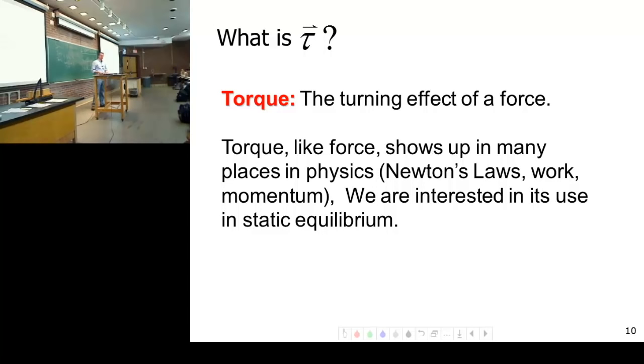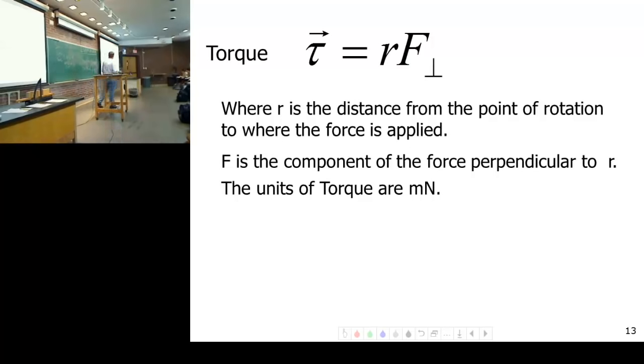Alright, torque. We use the symbol tau. For torque, what is it? It is the turning effect of a force. If I apply a force and it causes the thing to rotate, that's the piece that we need. Now torque, what is torque involved? The formula for torque, torque equals RF perpendicular. What does that mean? The force that's causing the torque or causing the thing to rotate, it's the component of the torque that is perpendicular to R.